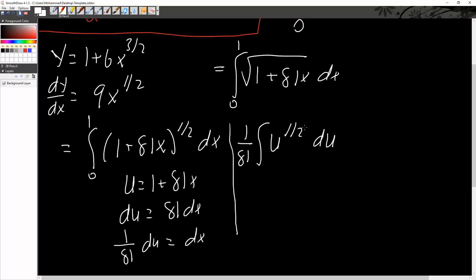And we take the antiderivative. So 1 half plus 1 is 3 halves. So we can divide by 3 halves, which is equivalent to multiplying by 2 thirds. So we'll get 1 over 81 times 2 thirds of u raised to 3 halves. u is simply 1 plus 81x. So we can just write it out now. 1 plus 81x raised to 3 halves.